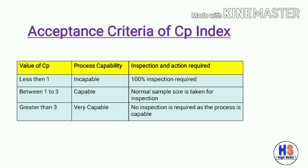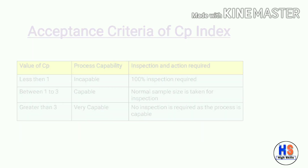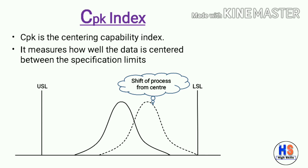Here is the acceptance criteria for the CP index. If CP is less than 1, the process is incapable and 100% inspection is required. If CP is between 1 and 3, the process is capable and normal sample size inspection is taken. If CP is greater than 3, the process is very capable and no inspection is required.